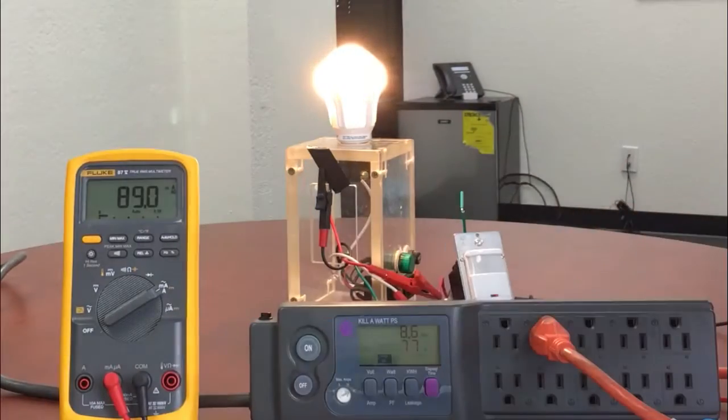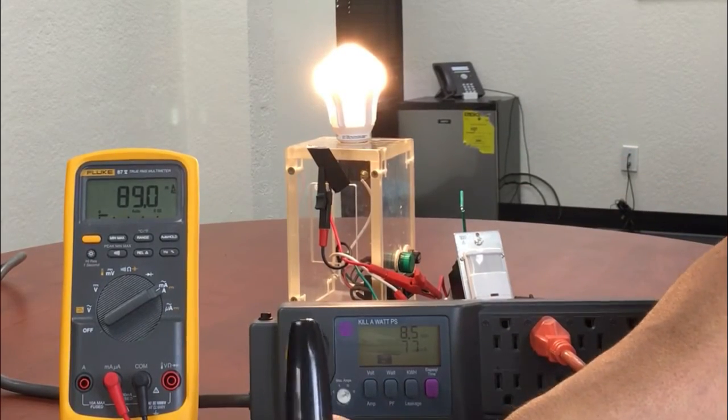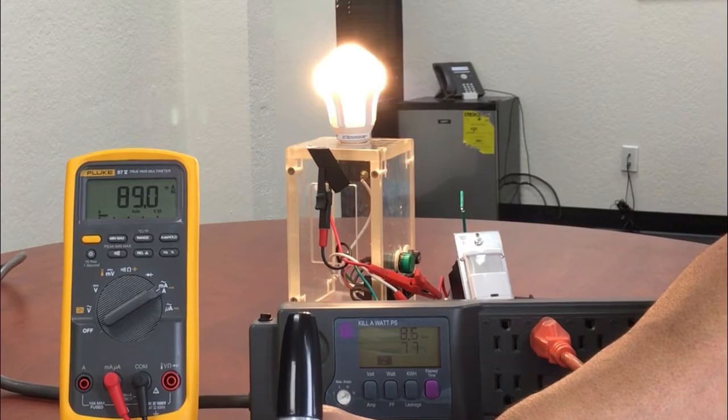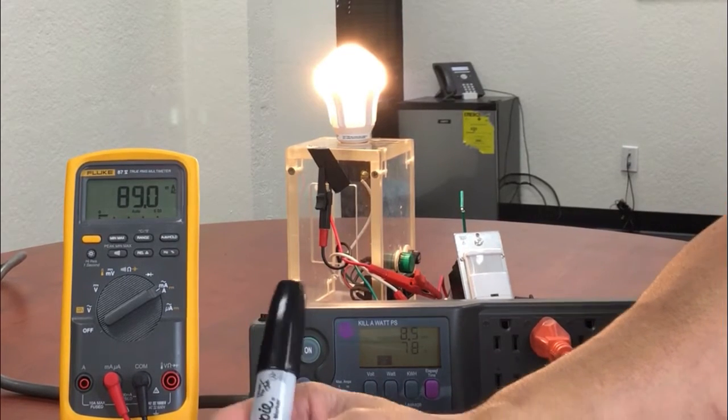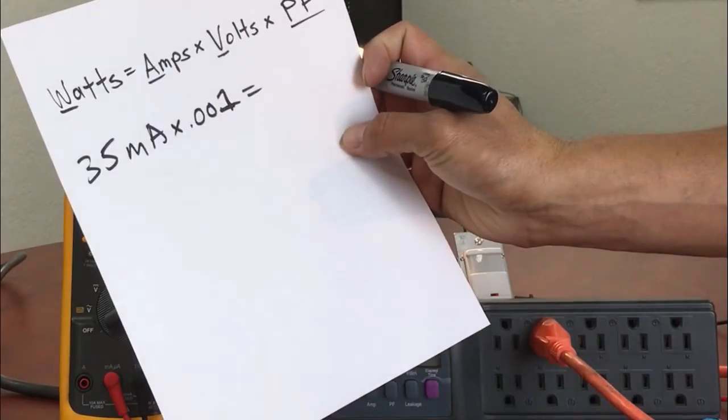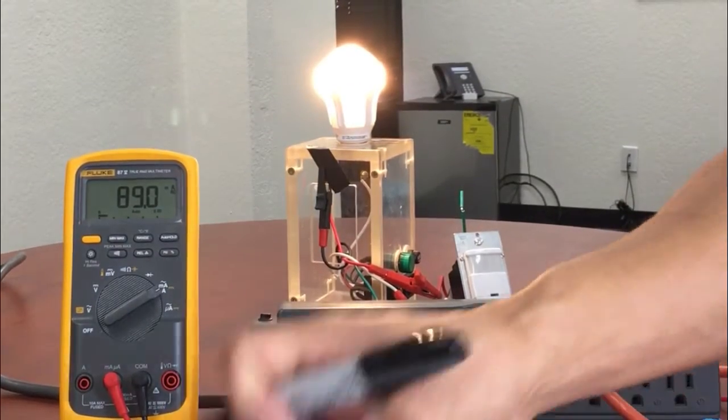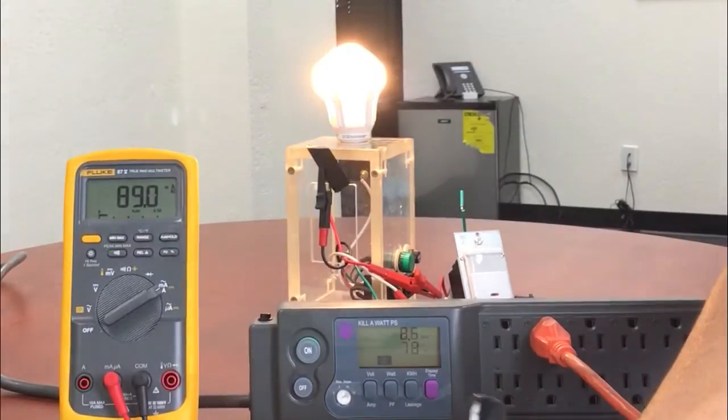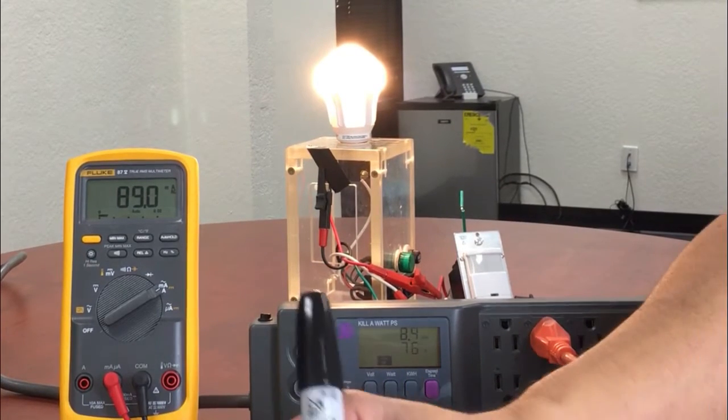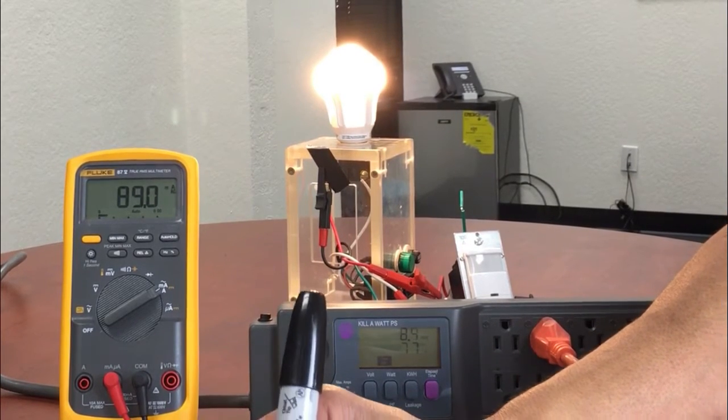We're going to start with the amps. We're reading 35 milliamps, and if we multiply 35 milliamps times 0.001, that'll give us 0.035 amps. So we're going to multiply 0.035 amps times 120 volts times 20% power factor.